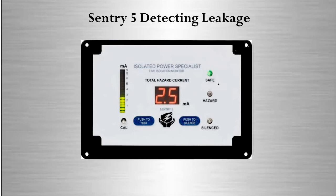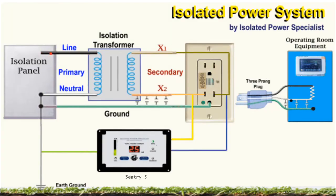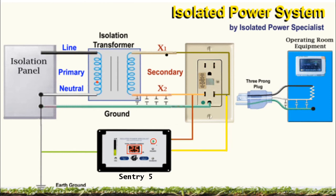Now that we've looked at the isolated power system and the line isolation monitor, let's merge them. As you can see, the Century 5 line isolation monitor is monitoring both X1 and X2 to ground. And currently, we have no alarmable leakage, as indicated by the green safe light, also by our digital readout of 2.5 mA, and displayed in our colored bar graph.